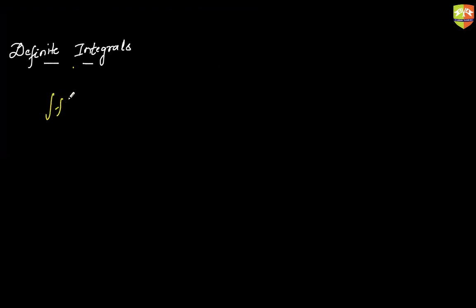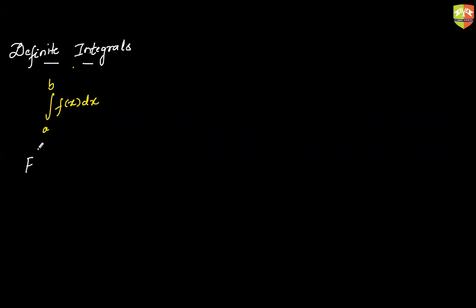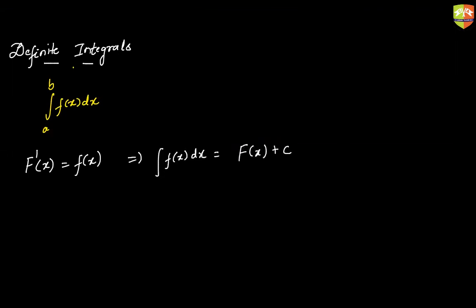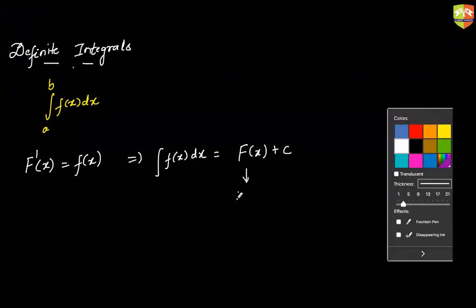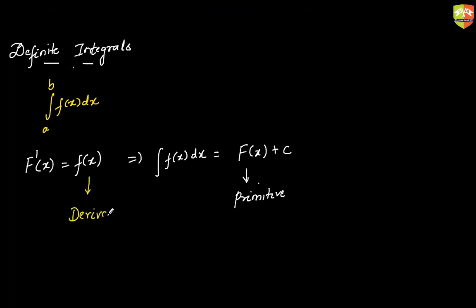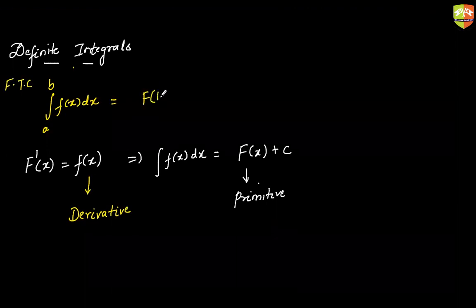First, we need to understand the fundamental theorem of integral calculus, which says that if you have a function whose derivative is f, then the integral of f is capital F(x) + C. Capital F is called the primitive or anti-derivative, whereas small f is called the derivative. The fundamental theorem says the result is F(b) minus F(a), and since this is a definite numeric value, such integrals are called definite integrals.